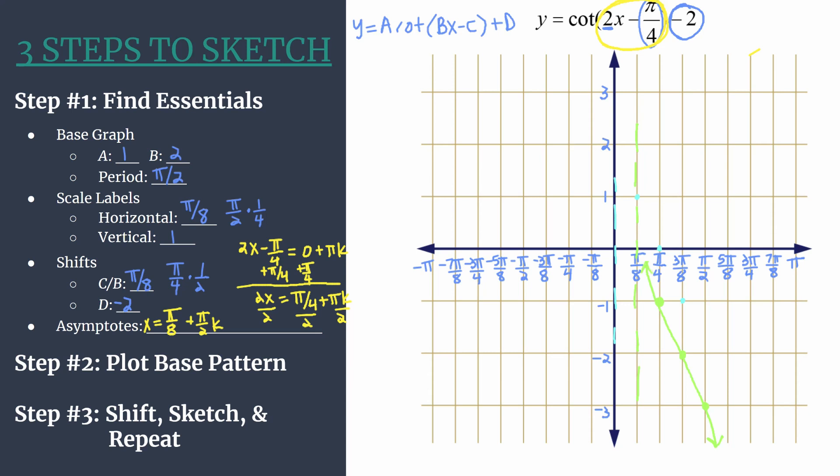Now, since trig graphs are periodic or cyclic, all we have to do is take this pattern and repeat it for as many cycles as we want. So let's first go to the right. Here's an asymptote at 5 π over 8. Remember, that's one of the asymptotes we predicted. That was when k is equal to 1. And then we'll put our 3 points, sketch in our curve. Here's another cycle.